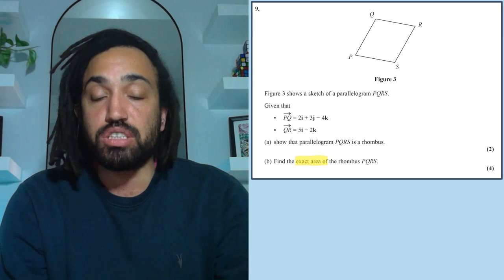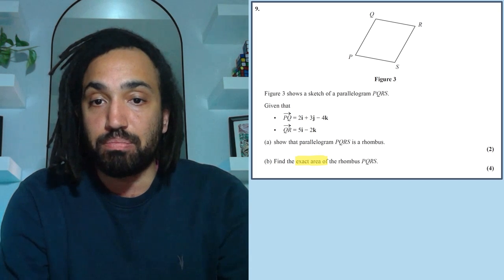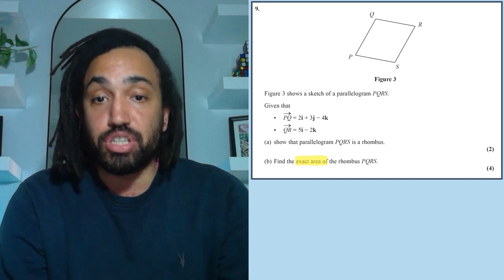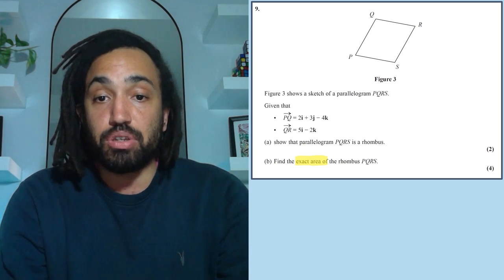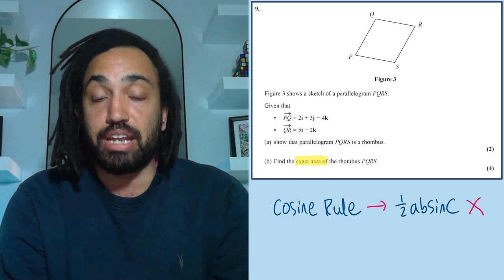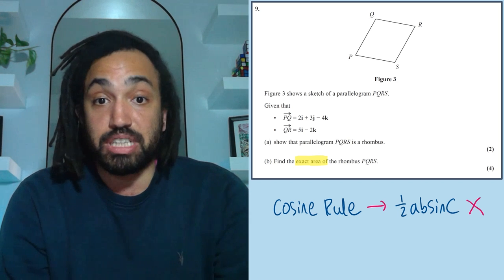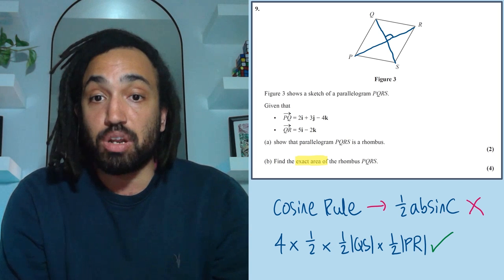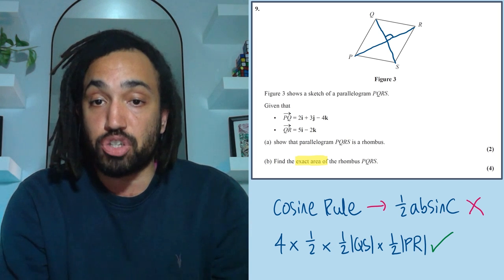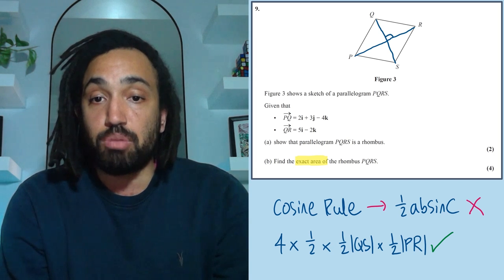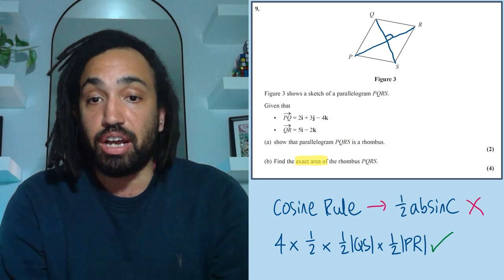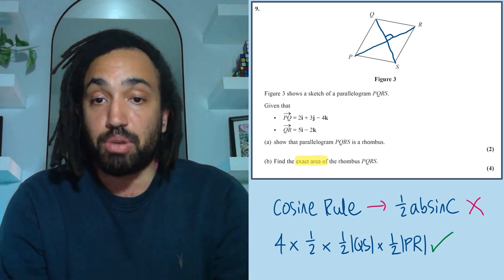And here we're asked to find the exact form. Now, this actually gives me an idea of what method to use for this question. Because if I start going down the cosine and then area of a triangle formula, then I'm going to get decimals essentially in my answer. So that's not going to give me an exact form. Instead, what I've got to do is use a little bit of a geometry hack, chop the rhombus up into four little triangles, and work out the base and the height of these triangles, and then multiply through by four.